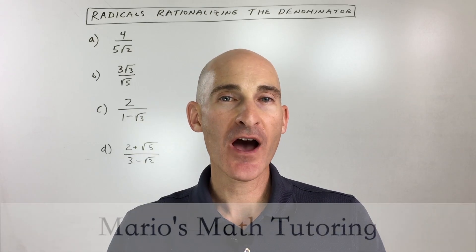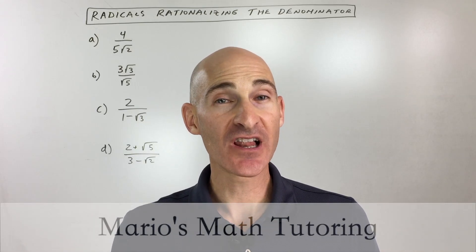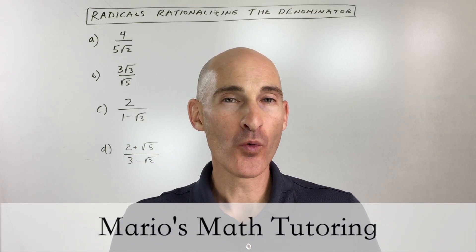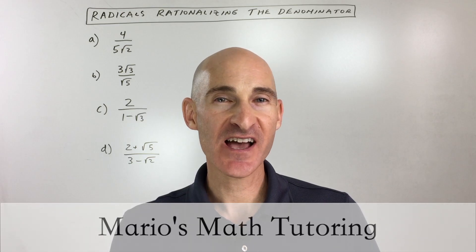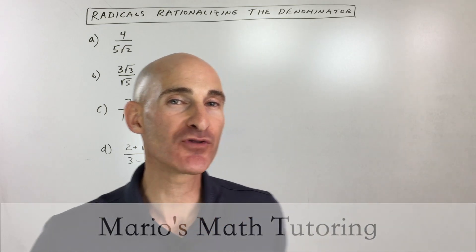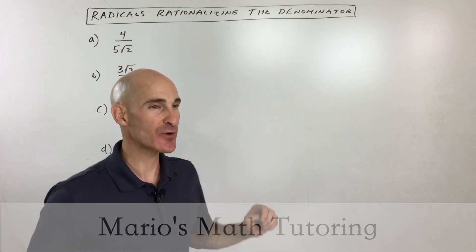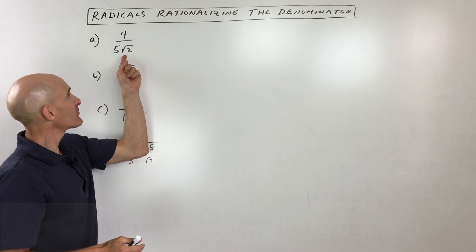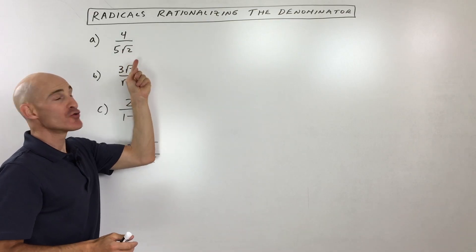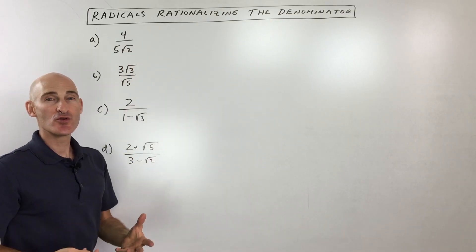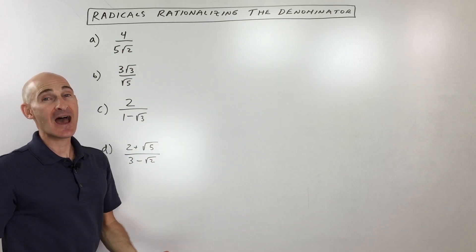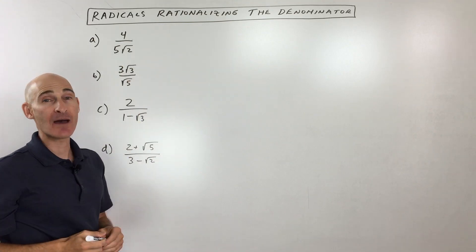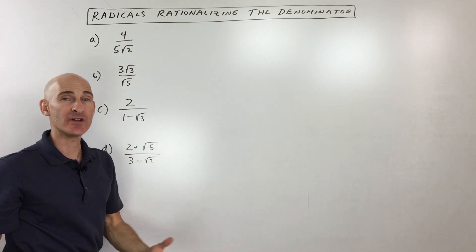In this video, you're going to learn how to rationalize the denominator. So what does that mean to rationalize the denominator? Let's take a look at four examples so you can see how to work with this. First of all, we don't want a square root or a cube root in the denominator — we don't want that radical in the denominator. We want to get rid of it.